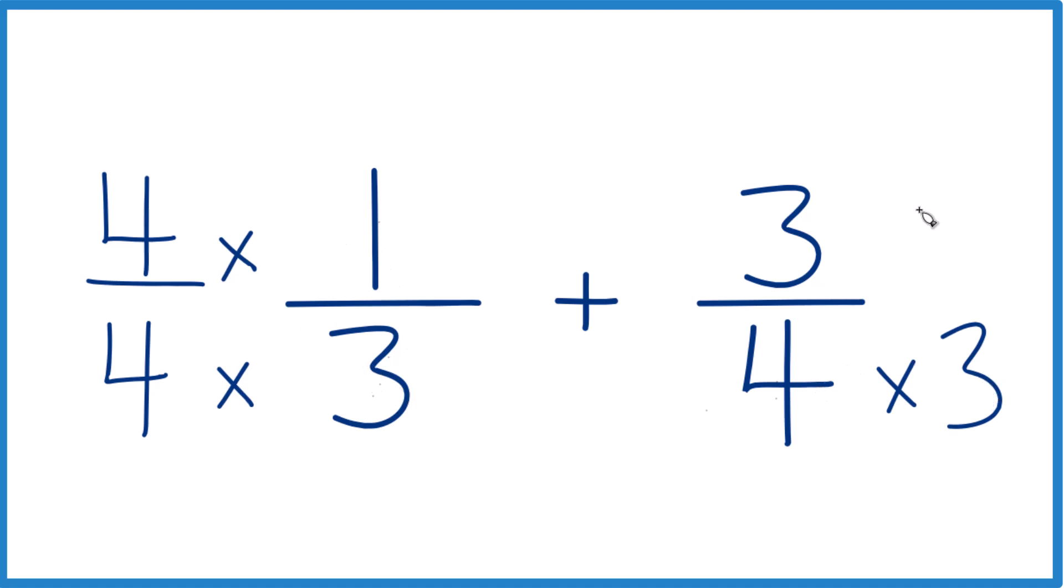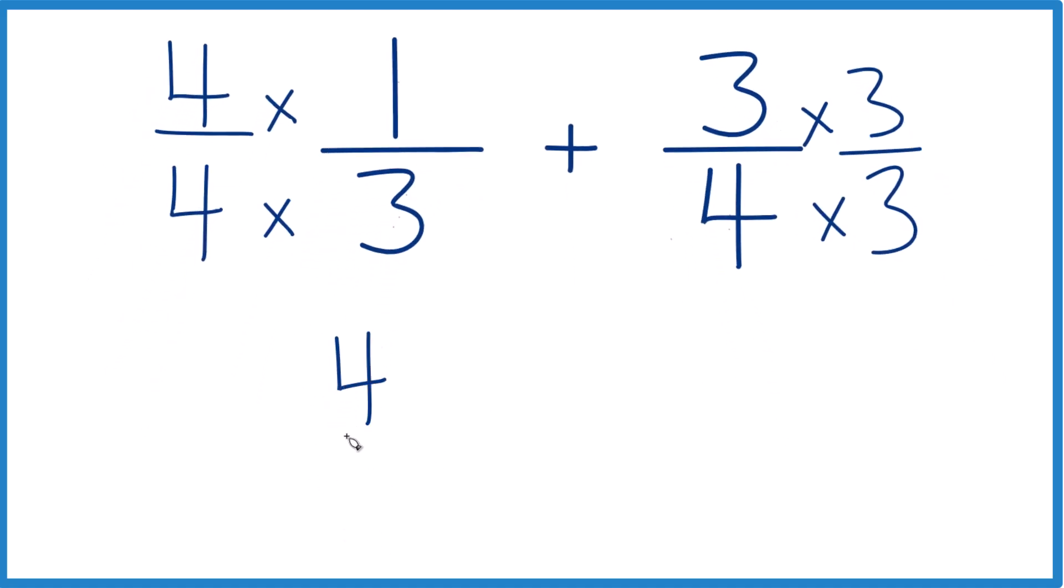Over here we multiplied by 3, so let's multiply the numerator by 3. And now 4 times 1 is 4, 4 times 3 is 12, plus we have 3 times 3 is 9, and 4 times 3 is 12.